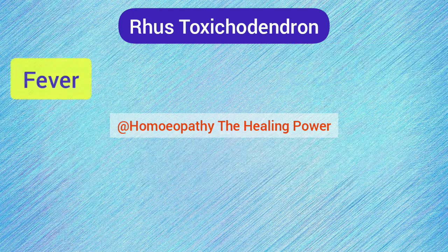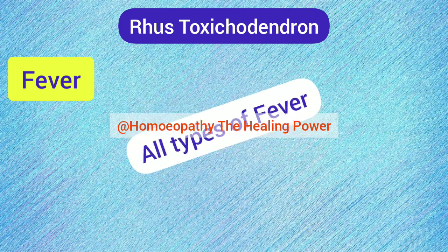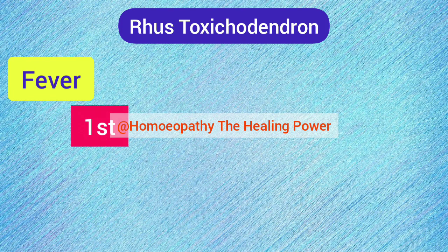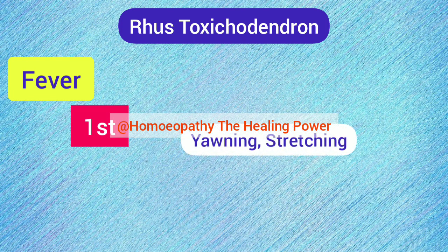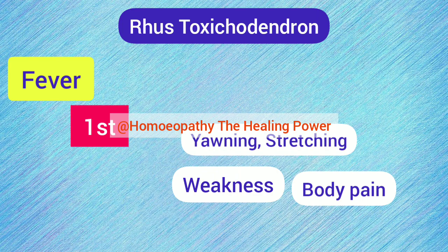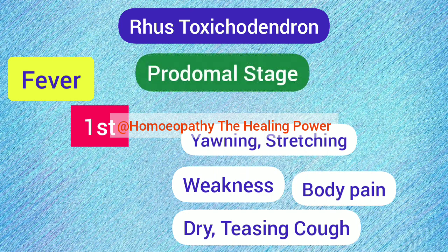Rhus Tox is indicated in all types of fever — remittent, intermittent, continuous, or even typhoidal fever. Fever starts due to bathing in rain, in ponds, in streams, or living in a damp room. Yawning and stretching are the first symptoms seen, followed by weakness, loss of energy, body ache, dry teasing cough, and fatigue — all of which are the prodromal stage of fever.